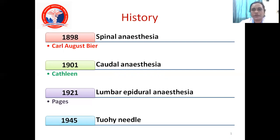Before going into the depth of spinal anesthesia, I will briefly give a discussion about its history. Who discovered spinal anesthesia? It was August Bier. He discovered it in 1898. So that is the introduction of spinal anesthesia.